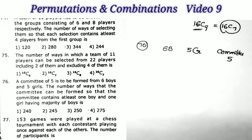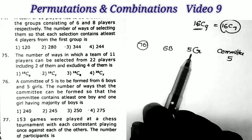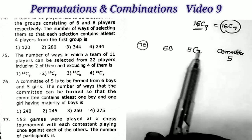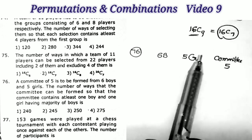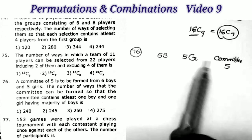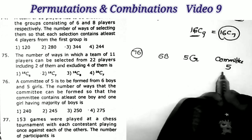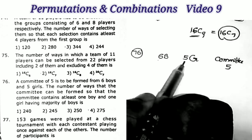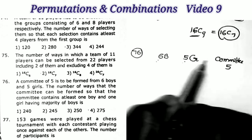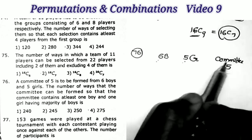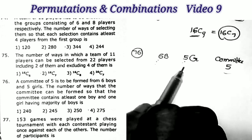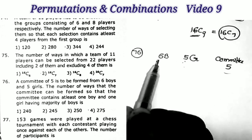Next question, number 76: a committee of 5 is to be formed from 6 boys and 5 girls. The conditions are: at least 1 boy, at least 1 girl, and boys must have majority. We need to select cases where boys outnumber girls: either 4 boys and 1 girl, or 3 boys and 2 girls.